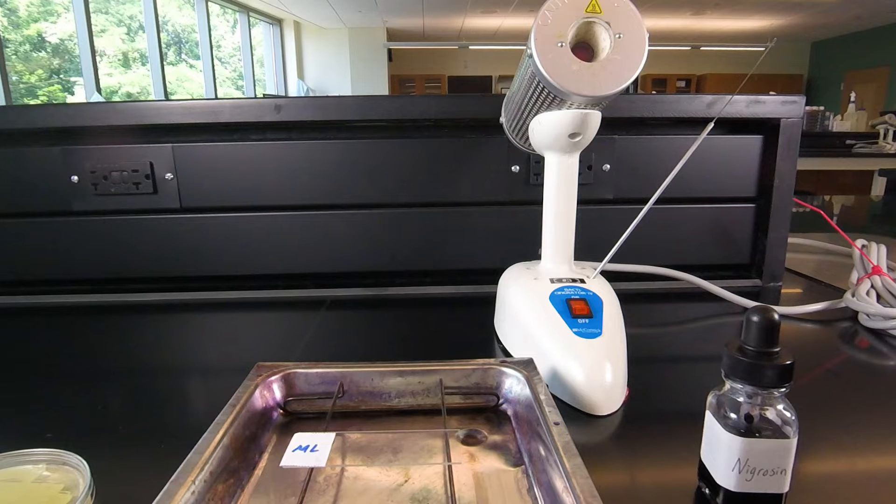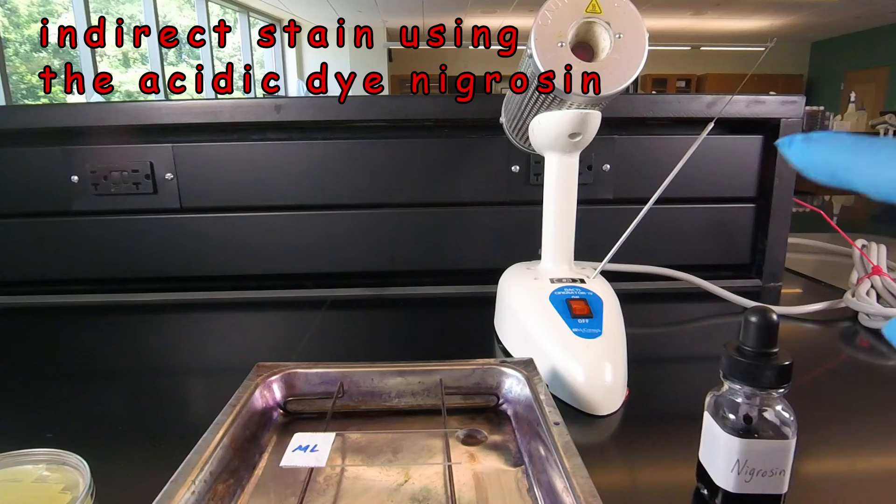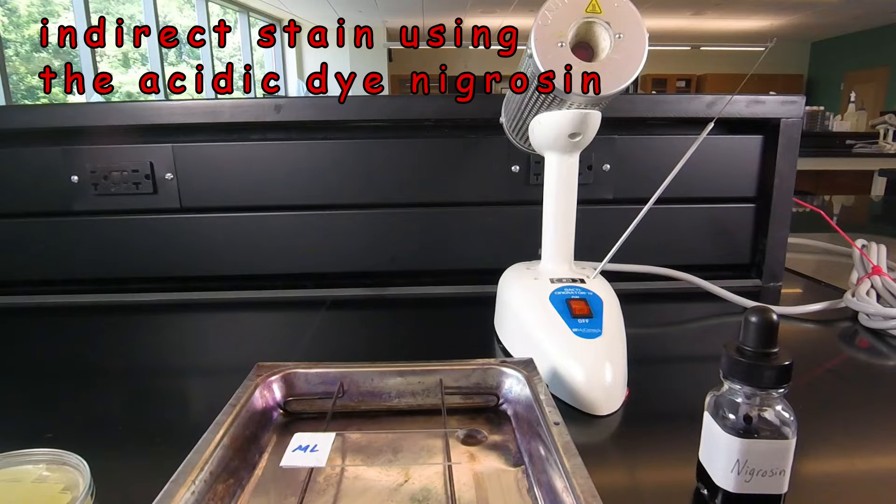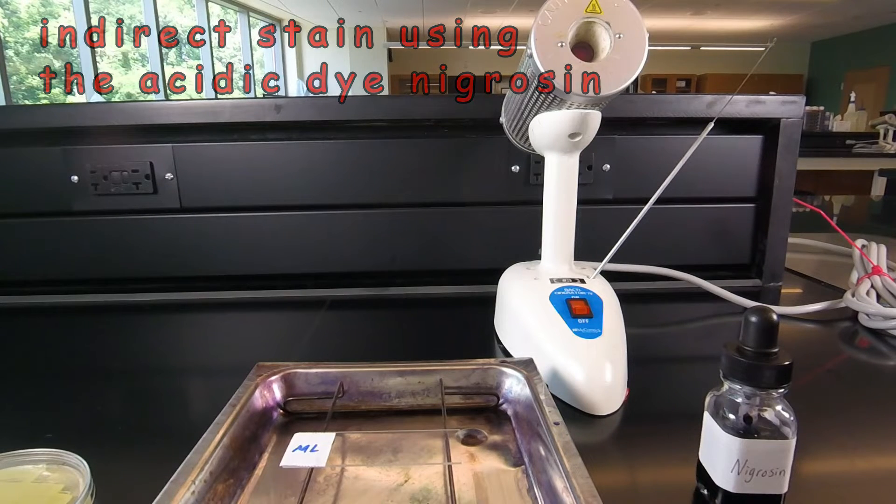In this video lesson, we're going to learn how to do an indirect stain using the acidic dye Nigrosin. Now in an indirect stain, we're actually staining the background of the slide rather than the organism itself, which is why it's called an indirect stain.